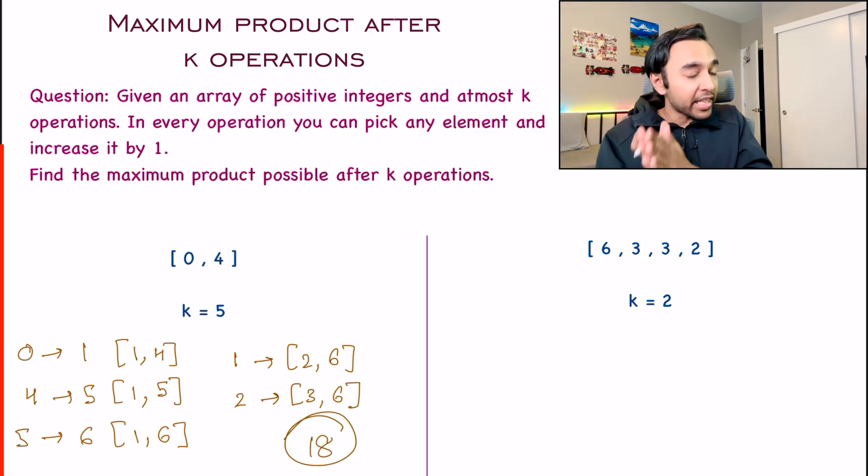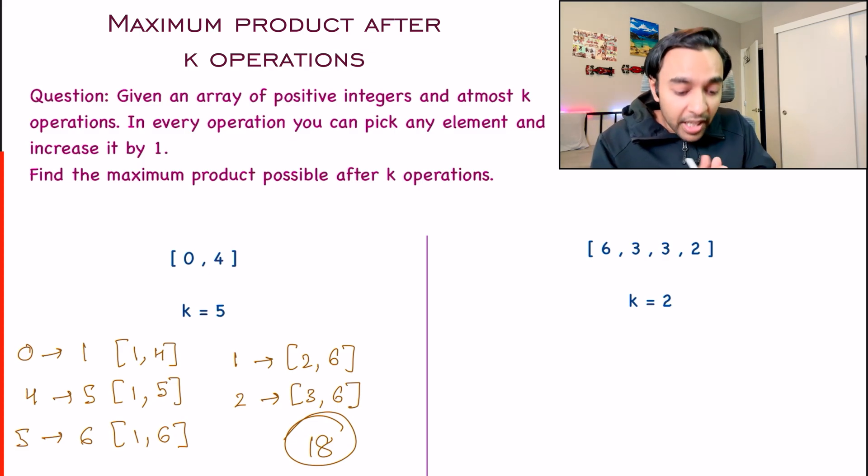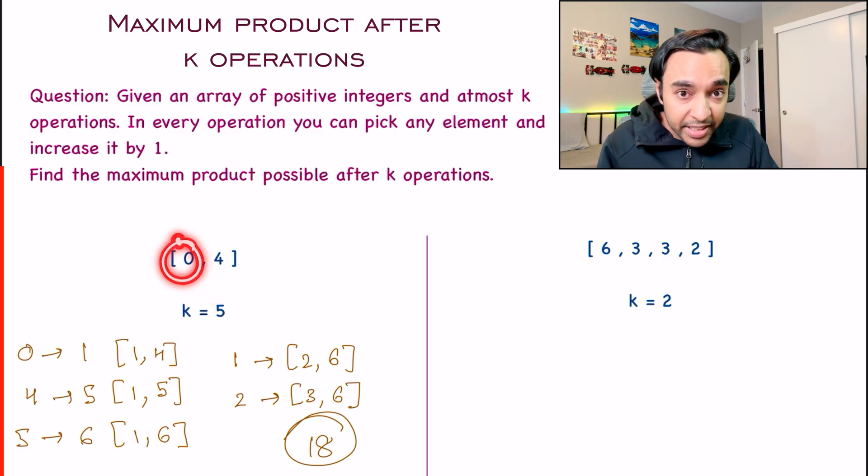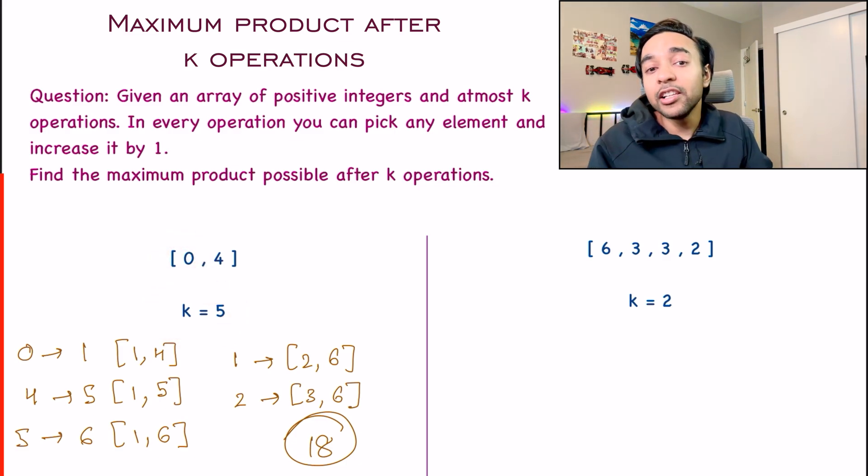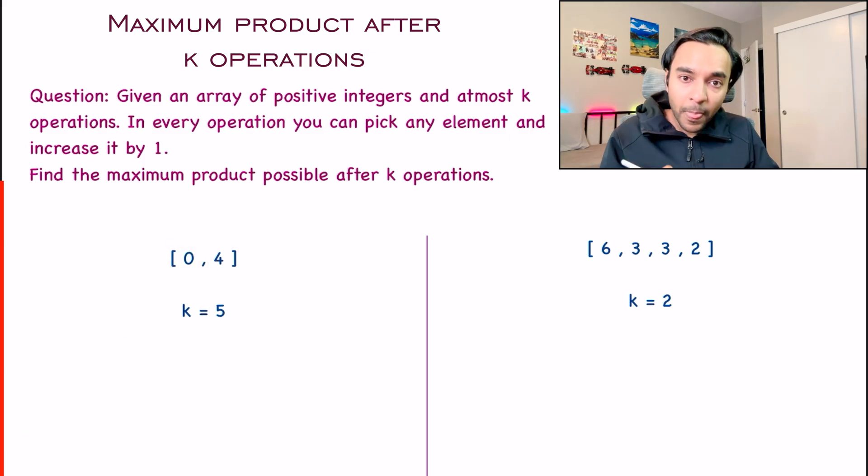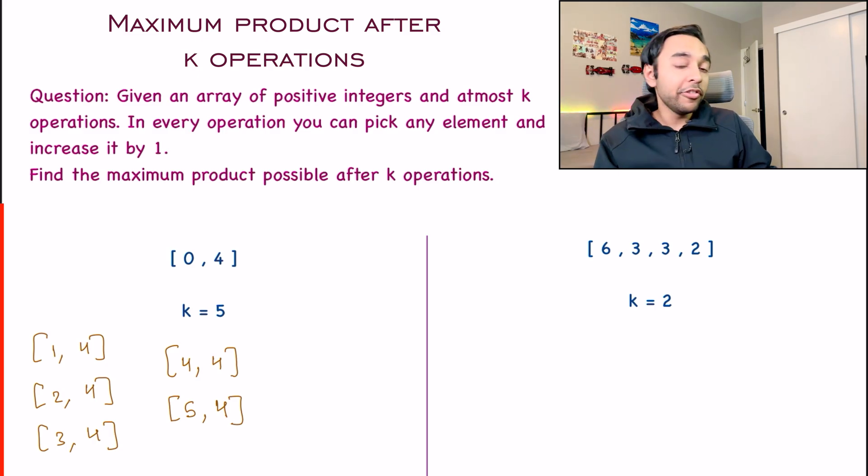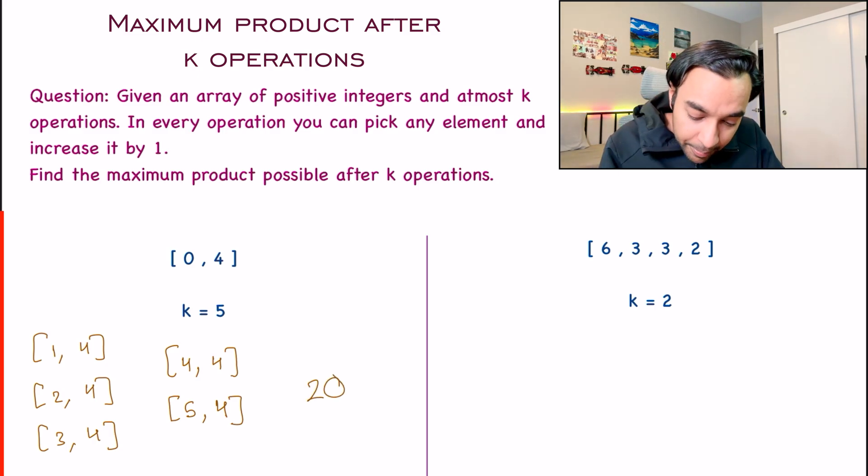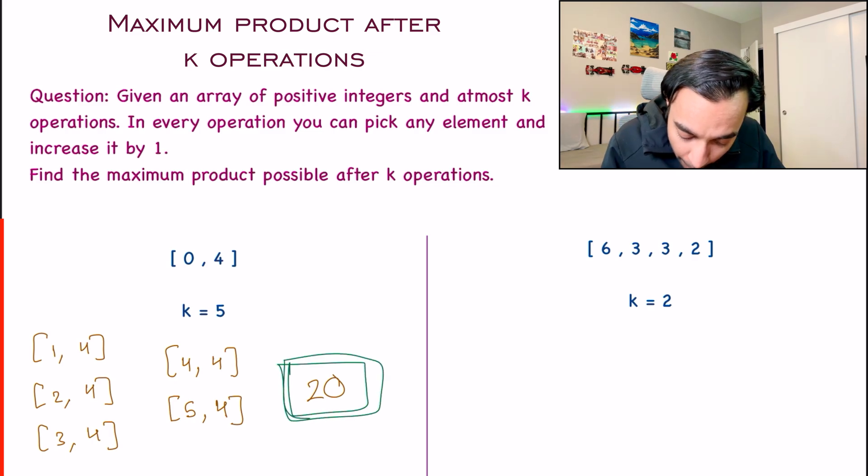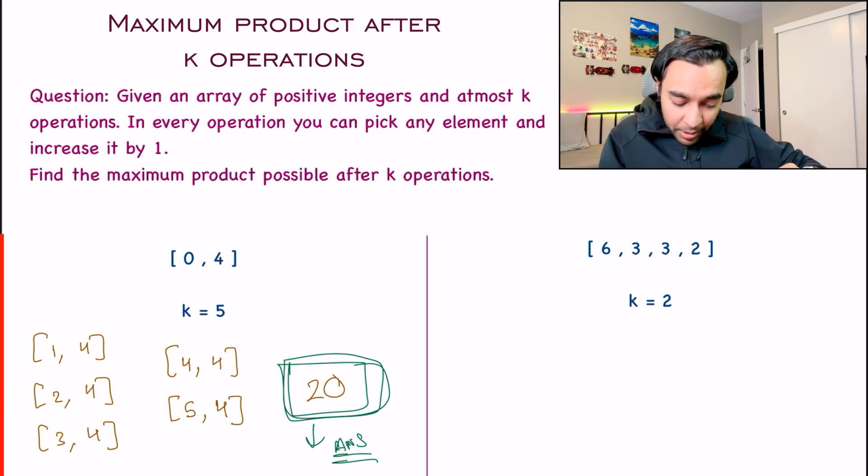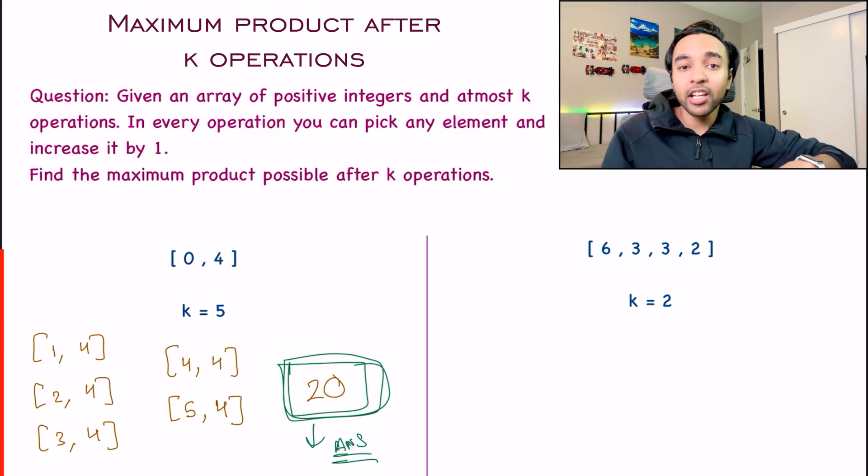And what is the product of elements that I am getting? If you find the product, the product turns out to be 18. But this is not the maximum product. The maximum product is obtained when you do 5 operations on the number 0 itself. That means for every operation, you increment the value of this number 0 by 1. So what will happen in those 5 operations? First of all, you will become [1,4], then [2,4] and then ultimately [5,4]. And now if you find out the product, the product turns out to be 20. And in fact, 20 is the maximum product possible.